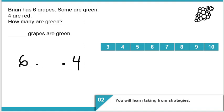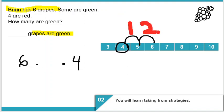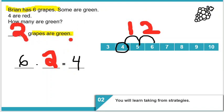Brian has six grapes. Some are green, four are red. We're trying to find out how many grapes are green. We start with the four red grapes and count on to six: four, five, six — that's one, two. So six minus two equals four, and there are two grapes that are green.